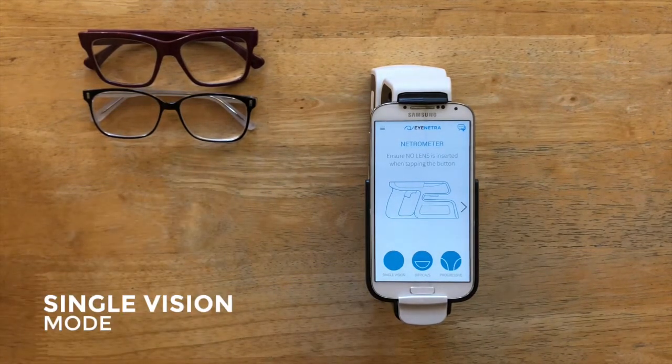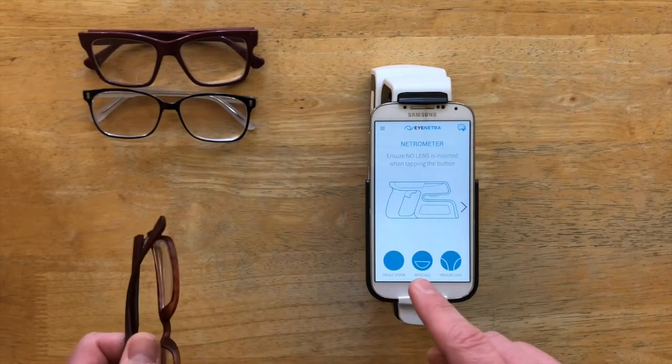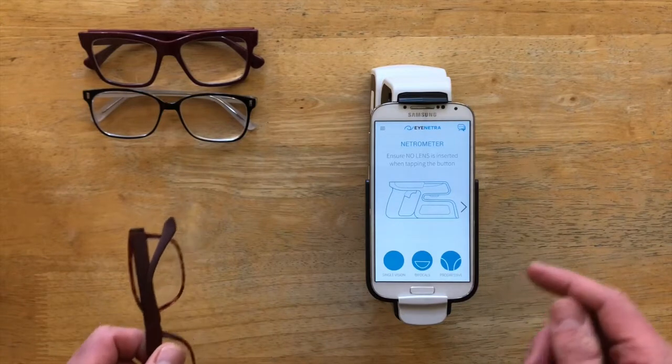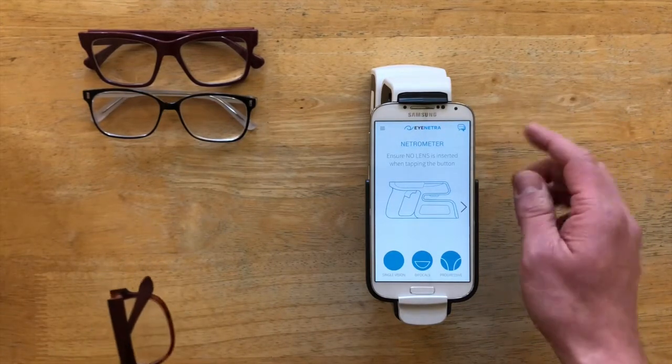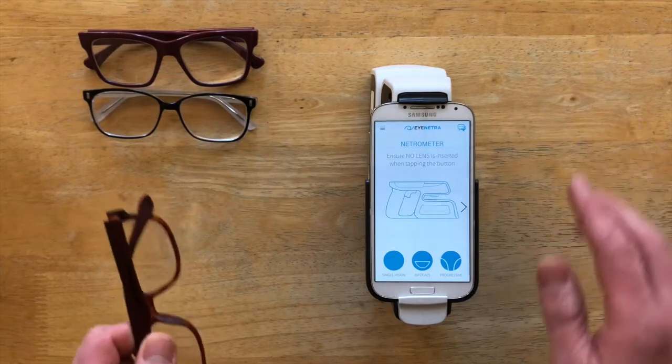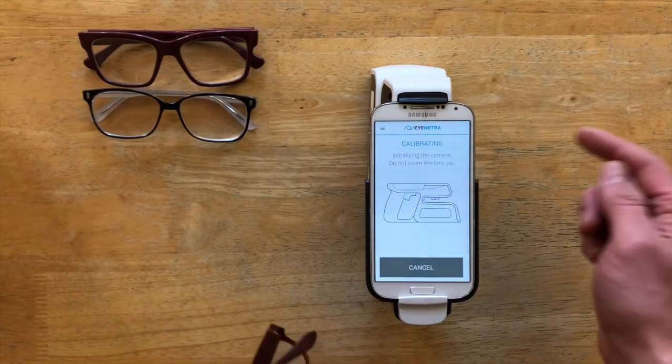Now the most important rule when using the Netrometer is when you first select the mode, whether it be single vision, bifocals, or progressives, it's very important that there's no glasses inside the mouth of the Netrometer at that time, as it's going to take a quick second to calibrate. So I'll start by selecting single vision, allow the device to calibrate.